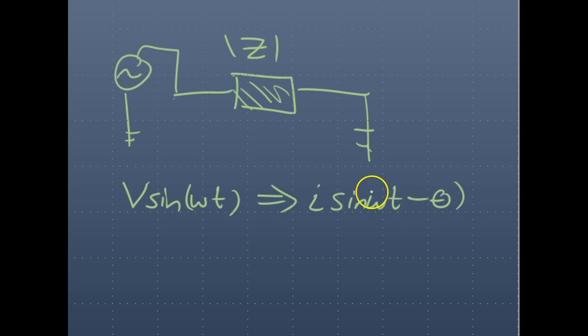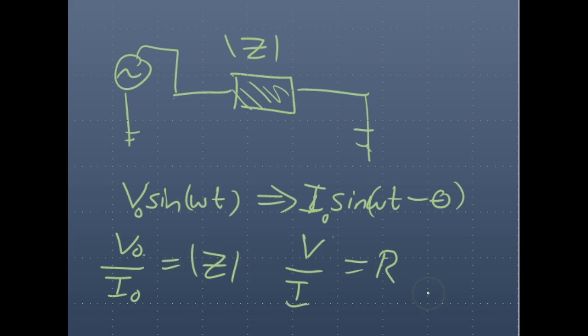If we apply a sinusoidal voltage amplitude, we're going to get a current sinusoidal response with some type of phase lag. We'll denote these amplitudes as I0 and V0. If we directly take these amplitudes V0 and I0, it gives us the absolute value of the impedance.